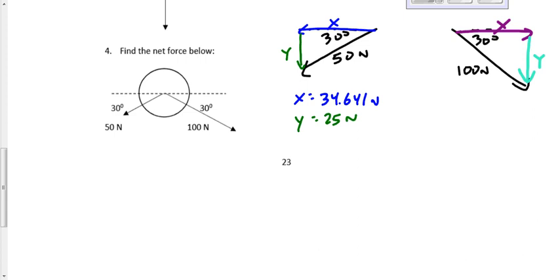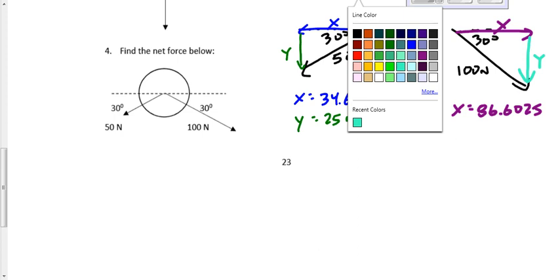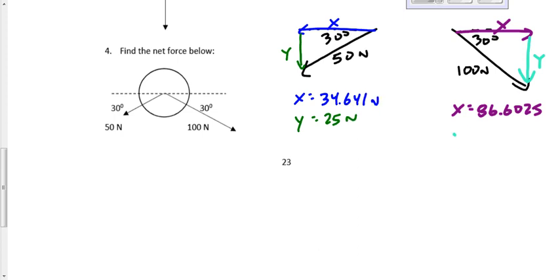We have our x component and we have our y component. Our x component would be found by saying 100 cosine 30. That gives me a value of 86.6025. And our y component would be found by saying 100 sine 30, which is 50 newtons. Let's box these off.